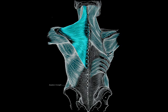The trapezius has three functional regions. The superior region, or descending part, supports the weight of the upper limb. The intermediate region, or transverse part, retracts the scapulae. The inferior region, or ascending part, medially rotates and depresses the scapulae.